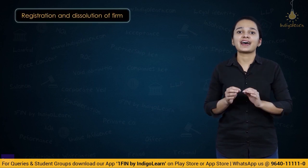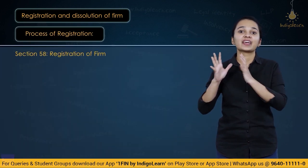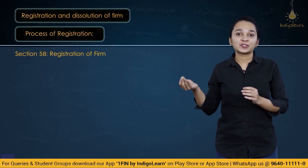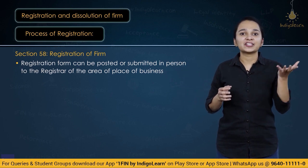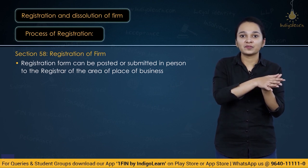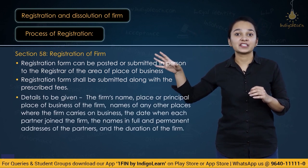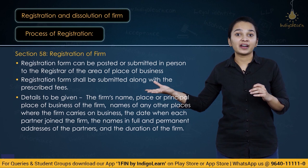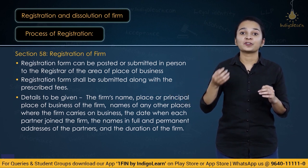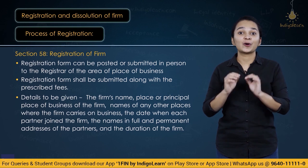Let us now do a quick recap of Unit 3, which talks about registration and dissolution of firm. Section 58 talks about registration — for registration, we can either post the prescribed form or directly go to the registrar of the area where the firm's place of business is situated and file the form with fees. The details required in the form are the firm's name, place of business, details of other branches, full names and addresses of all partners, date of joining of partners, and duration of the firm if it is a partnership for a fixed period.